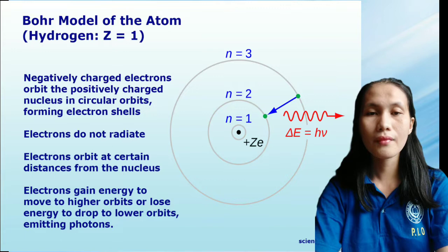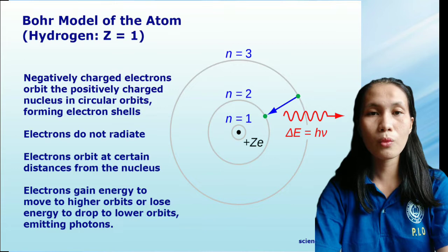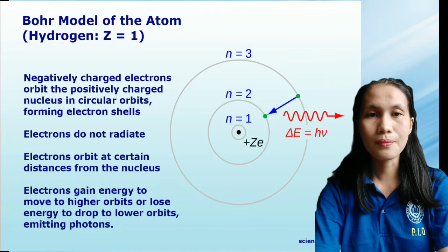Electromagnetic energy will be absorbed or emitted if an electron moves from one orbit to another. Not all electron orbits are permitted.